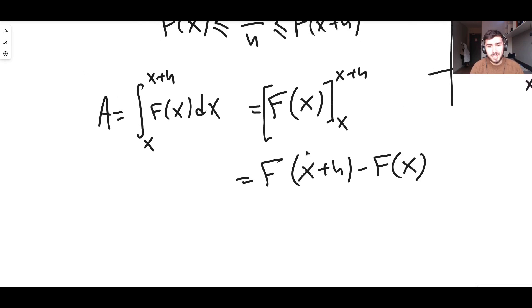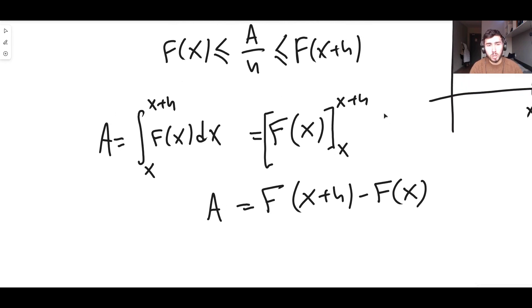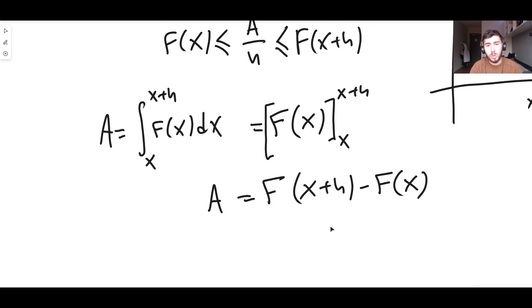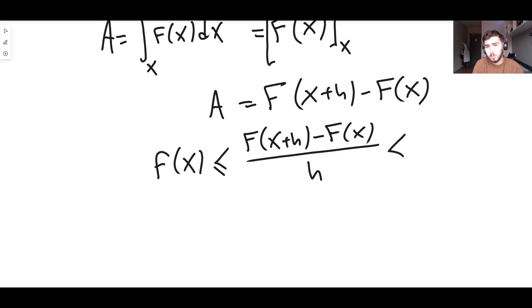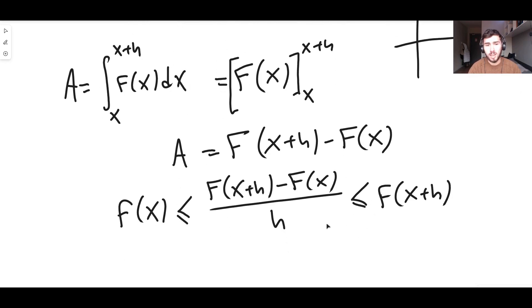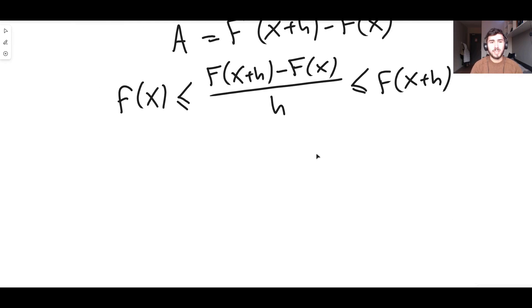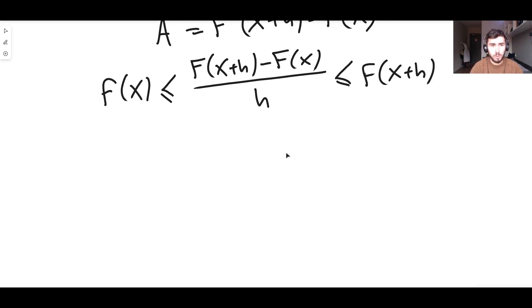So we can now replace A in the inequality with that definition of A, because this is the real exact area. Using that, we can say: lowercase f of x must be less than or equal to capital F of x plus h minus capital F of x, divided by h, which must be less than or equal to f of x plus h. All we've done is taken the inequality and replaced A with its actual value. Now what we want to do — and this is really cool — is take the limit of all three of these terms as h goes to zero.